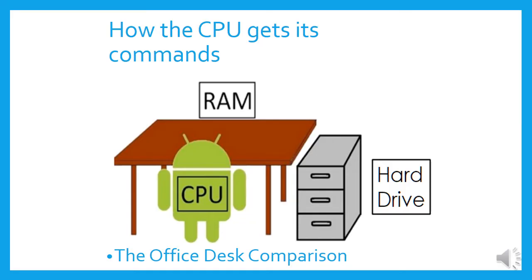How does the CPU get its commands? You can look at the office desk comparison. The CPU is like you, busy working at your desk one afternoon. Before you can work with a book, you have to take the book out of your suitcase, which is like the hard drive, and put the book on your desk — you can't work with it while it's still in the suitcase. So the CPU also wants the data and instructions it's busy with to be in RAM, which is like when it's on the desktop. As long as the data, instructions, or software are still on the hard drive, the CPU cannot talk to it directly. That software has to be moved or copied from the hard drive into the RAM so that the CPU can start working with it.